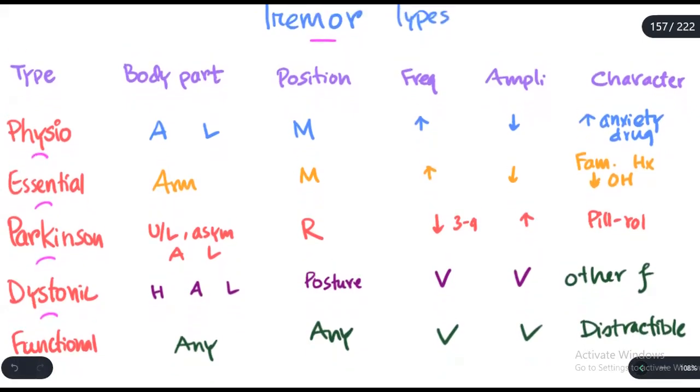Usually the physiologic tremor involves arms more than the legs. It's commonly seen with movement. It has a high frequency, which makes the amplitude very low. High frequency means low amplitude, and physiologic tremor is commonly seen during anxiety or after taking drugs.